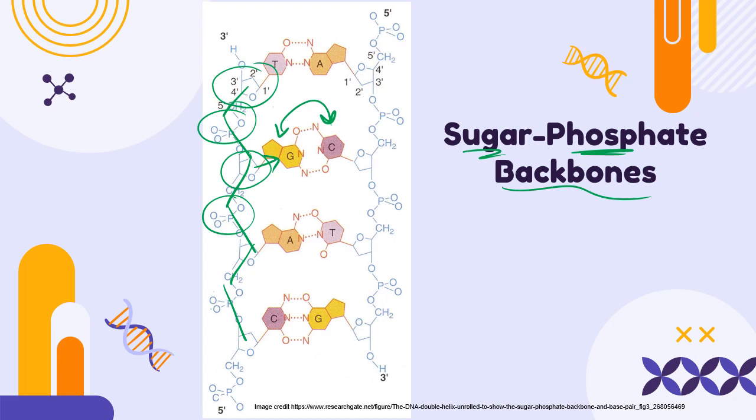We can show this backbone with simplified nucleotide diagrams. Here's our phosphate group, a pentagon for the sugar, and a rectangle for the nitrogenous base. Circles represent phosphate groups, pentagons are pentose sugars, and rectangles are nitrogenous bases.